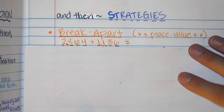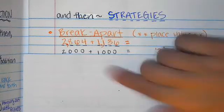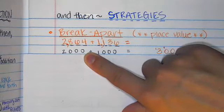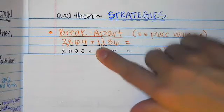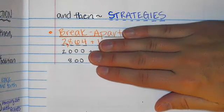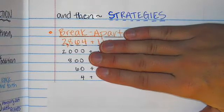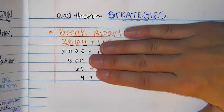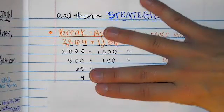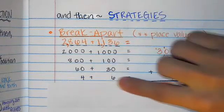Our addition problem is 2,804 plus 1,136 and what you are going to do is you are going to break this number up by place value. So you take 2,000 that's the first number in this place value expanded form and then you will do 800 then you have 60 and then you have 4 and likewise you have 1,000 plus 100 plus 30 and then 6.